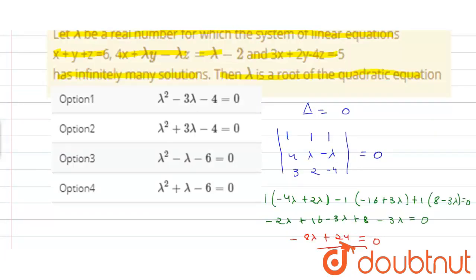There is only one option which satisfies lambda equals 3, and that is option 2. Hence option 2 is correct.